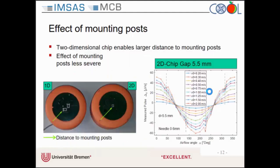One method to reduce this problem is to place the sensor directly at the center of the housing. With the separate old chip solution that is not possible, but with the new 2D chip we can go directly to the center, which increases the distance to the mounting posts and gives a better signal with less severe dents. It's not a full statistical evaluation yet — the chip is only two weeks old — but we are very optimistic that we can gain something on this side.